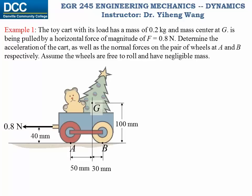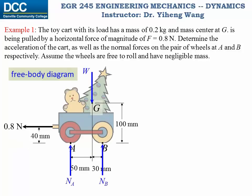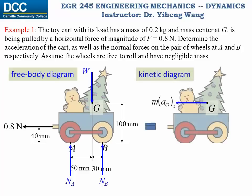Let's look at this problem. We have a toy cart with total mass of 0.2 kg. Its center of gravity is marked on the image, and it is subjected to a 0.8 N horizontal force pulling it to the left. We need to determine the acceleration of the cart as well as the normal forces at wheels A and B. Since the wheels are free to roll and have negligible mass, this is a problem of translation, and every point moves with the same linear acceleration. The free body diagram shows unknown forces N_A and N_B, the weight force, and the kinetic diagram shows only linear acceleration a_Gx pointing to the left.